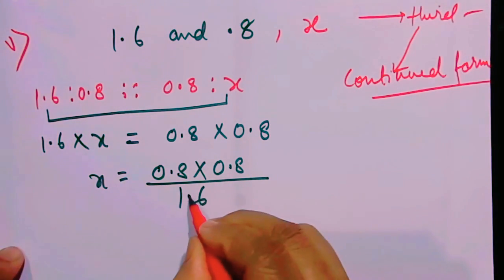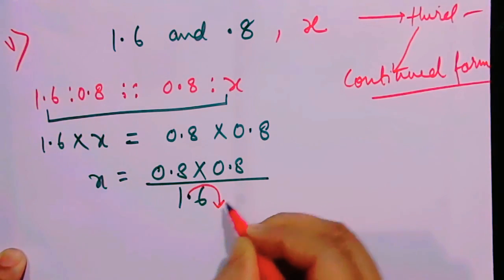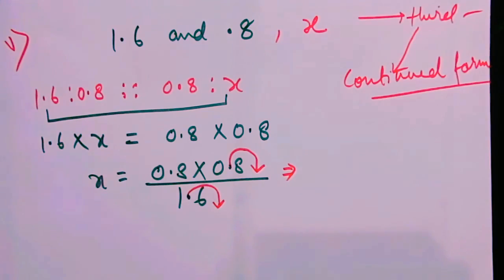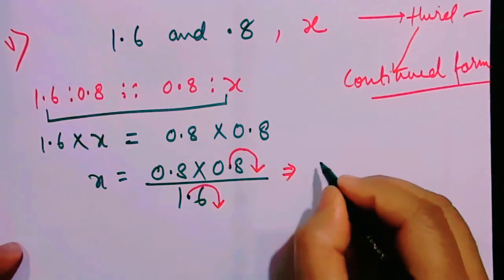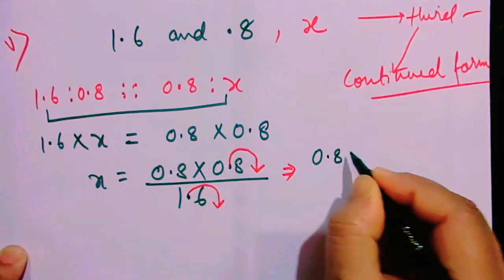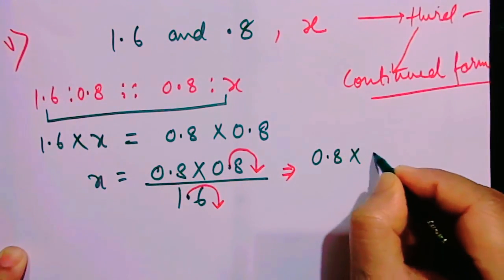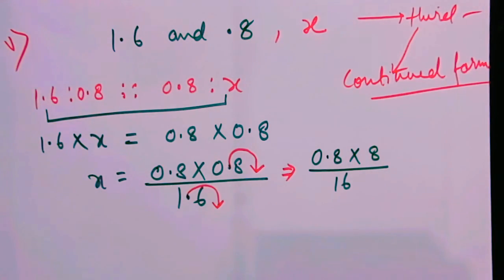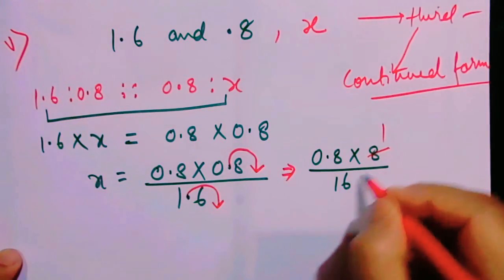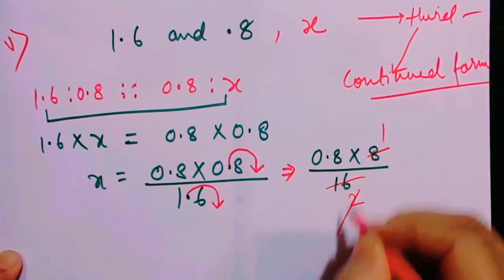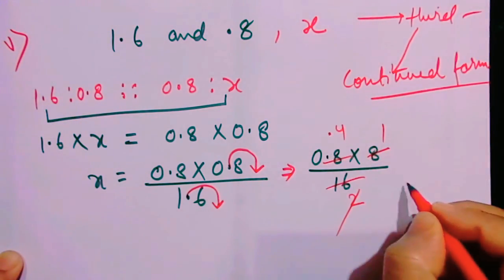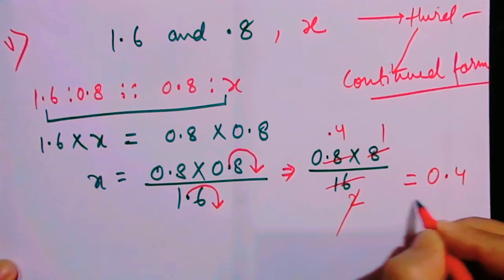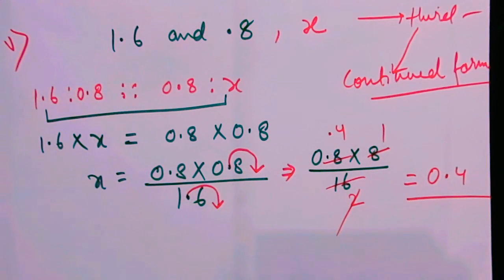I will remove one decimal place from the numerator and one from the denominator, so the work looks neat. Let me cancel: 8 one time, 2 times, and 2. The answer is 0.4 as your solution.